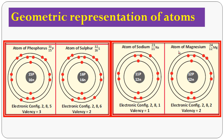For magnesium, atomic number 12, electronic configuration: 2, 8, 2. First shell contains 2 electrons, second shell contains 8 electrons, and the valence shell contains 2 electrons. So magnesium has valency 2. In this way, you draw the geometric representation of phosphorus, sulfur, sodium, and magnesium along with their valencies.